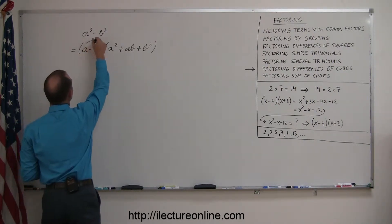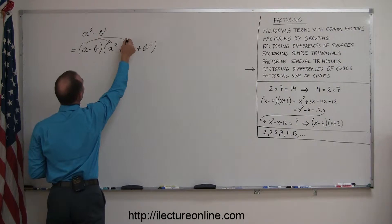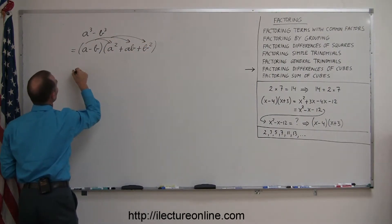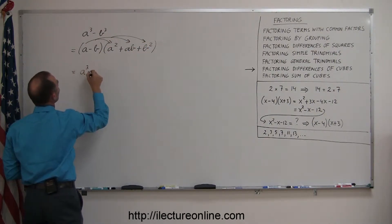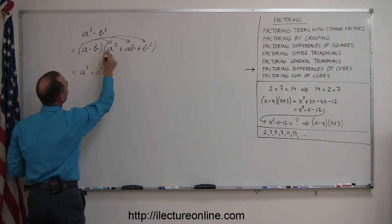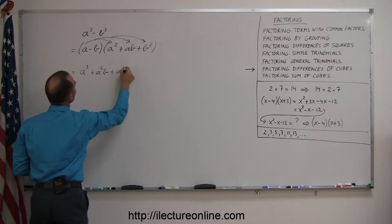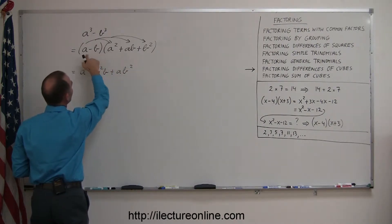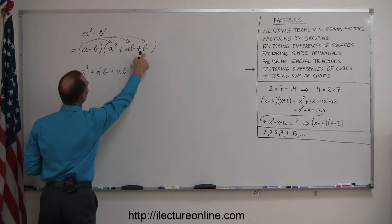We're going to multiply A times A squared, A times AB, and A times B squared. So this equals A cubed plus A squared B plus AB squared — that's simply A times A squared, A times AB, and A times B squared.